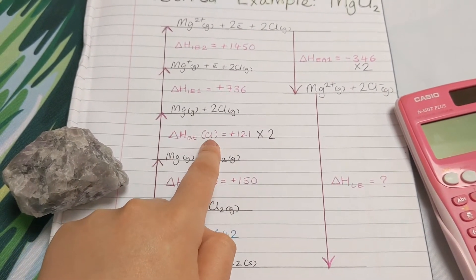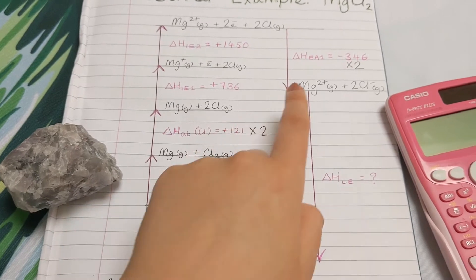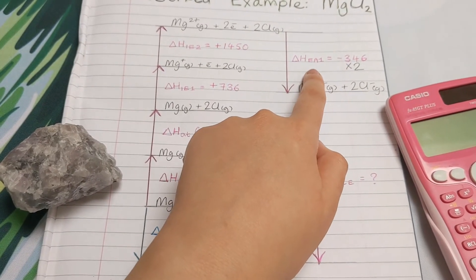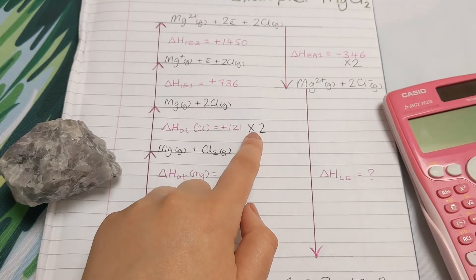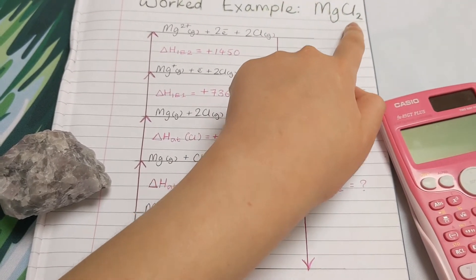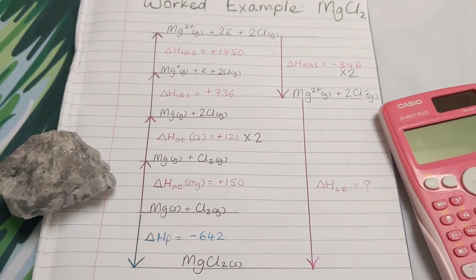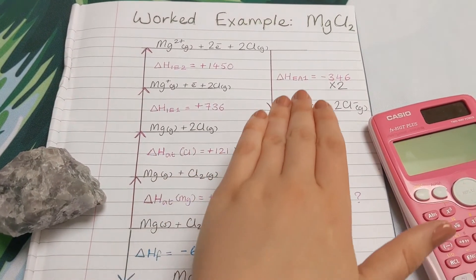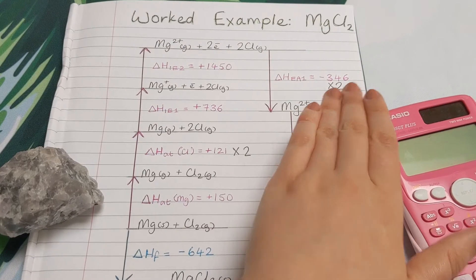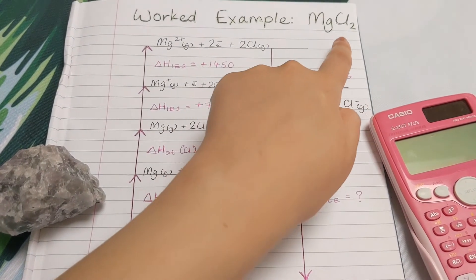like atomization of chlorine and electron affinity of the chlorine, we have to times those numbers by 2 because there's two formula units of the chlorine. So these are the only two steps, atomization of chlorine and electron affinity of chlorine, that we times by 2 because of this formula.